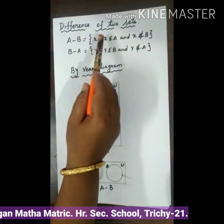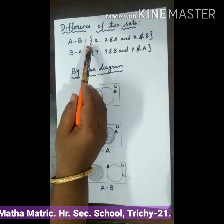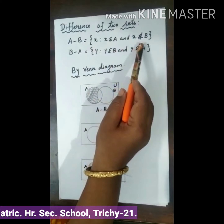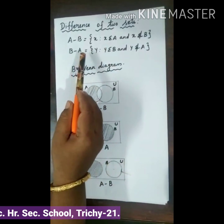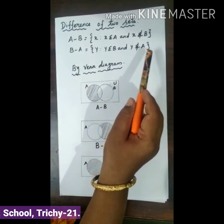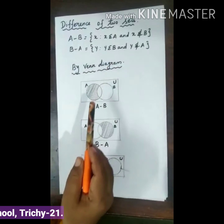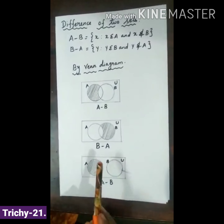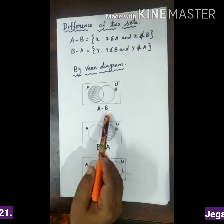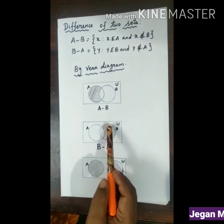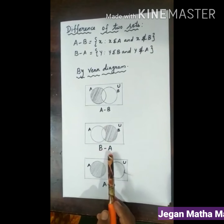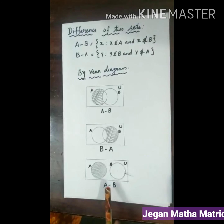Next, difference of two sets. A difference B is equal to the set of X such that X belongs to A and X does not belong to B. B difference A is equal to the set of Y such that Y belongs to B and Y does not belong to A. By Venn Diagram, this shaded region is called A difference B, and the second shaded region is B difference A, also shown for disjoint sets.